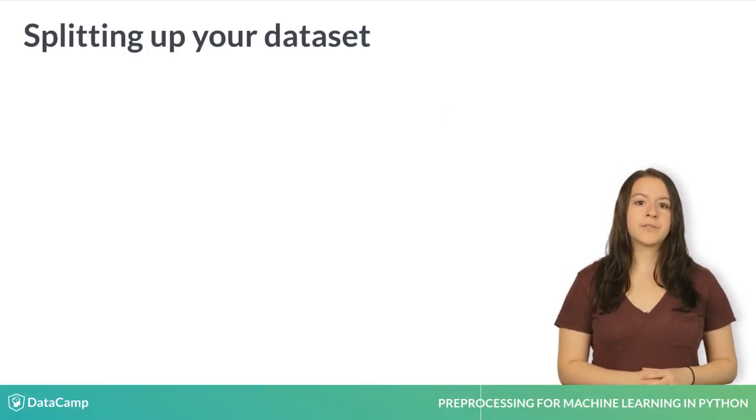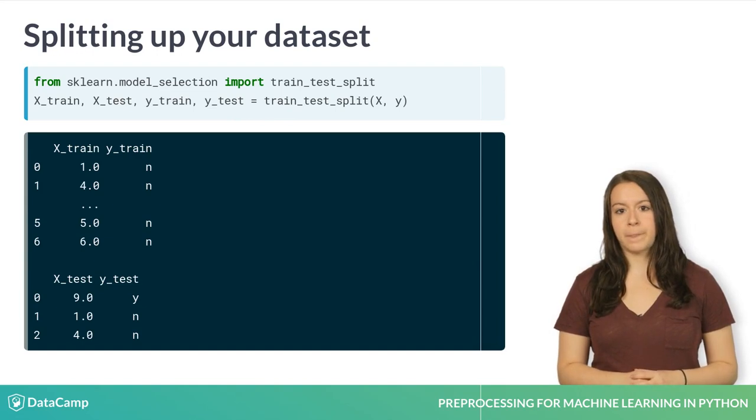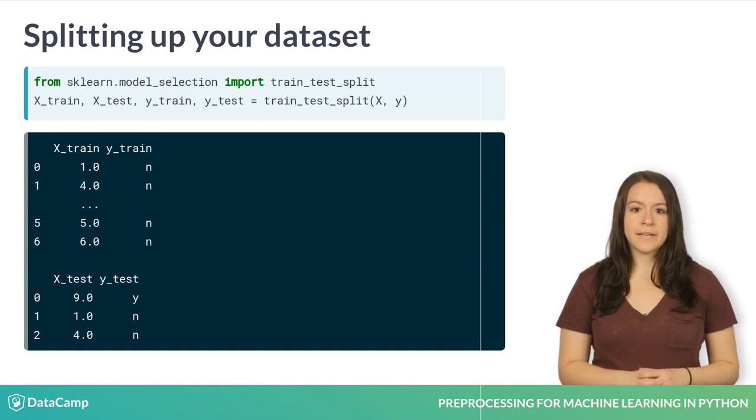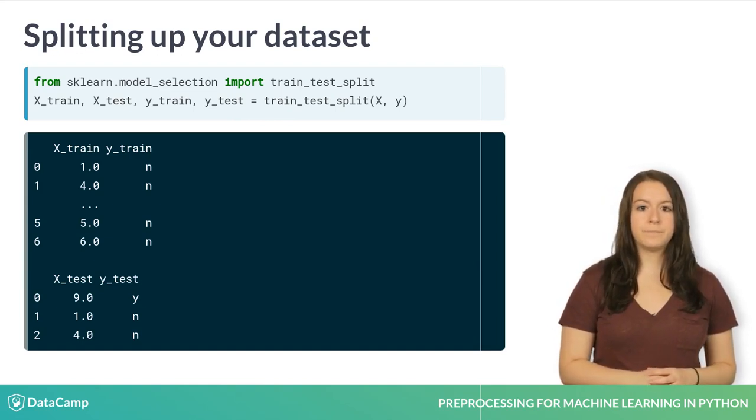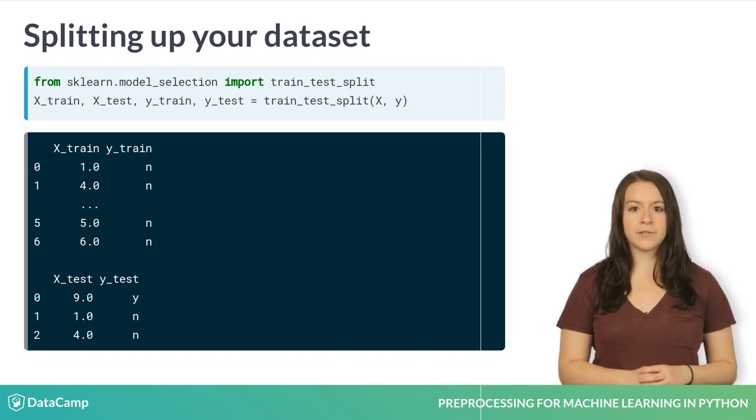Just to review, this is how you split up your data set in scikit-learn using the train_test_split function. This should look familiar to you. The function shuffles up your data set and then randomly splits it. By default, the function will split 75% of the data into the training set and 25% into the test set.